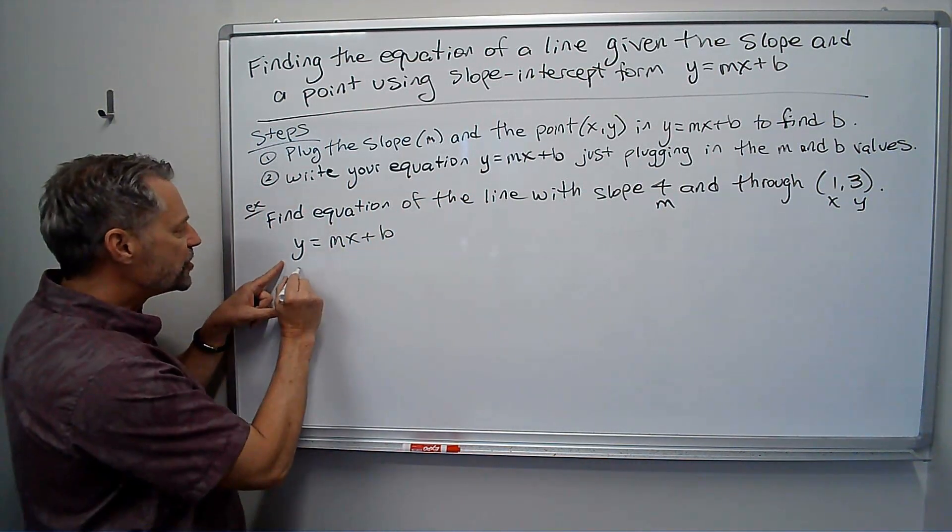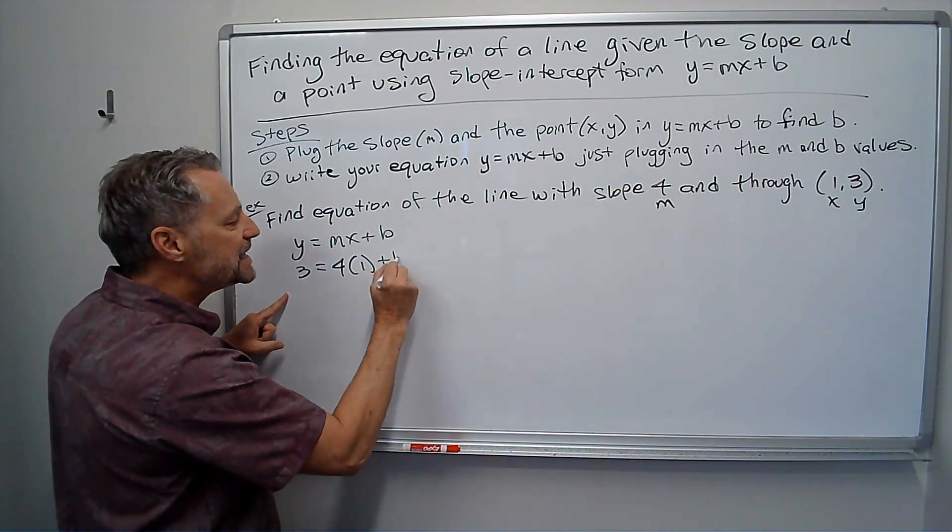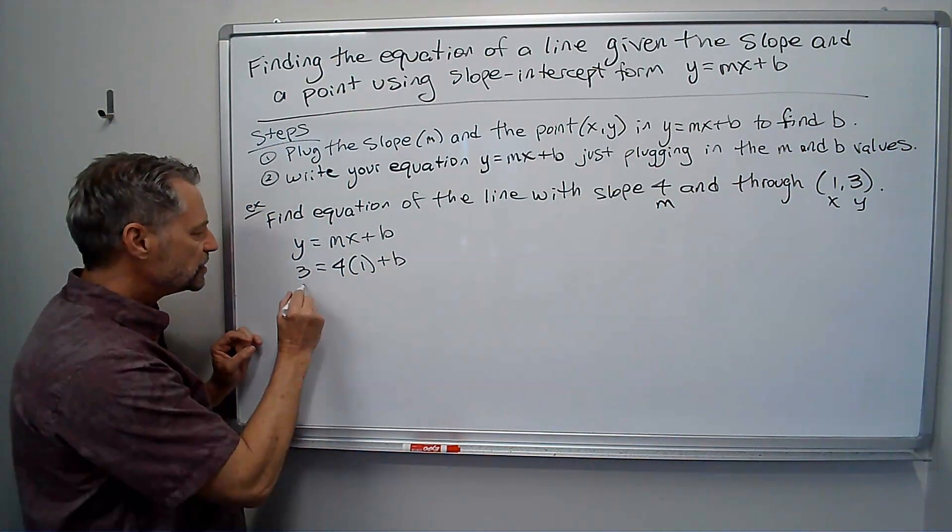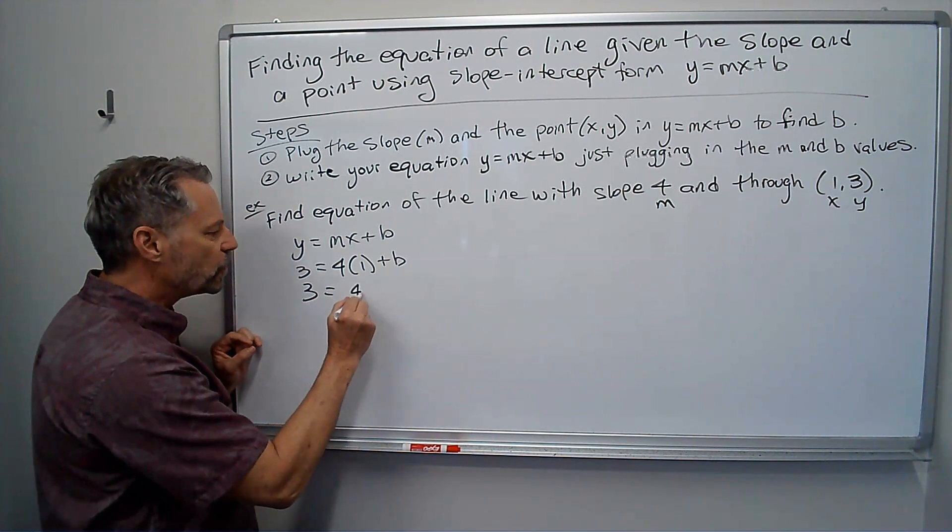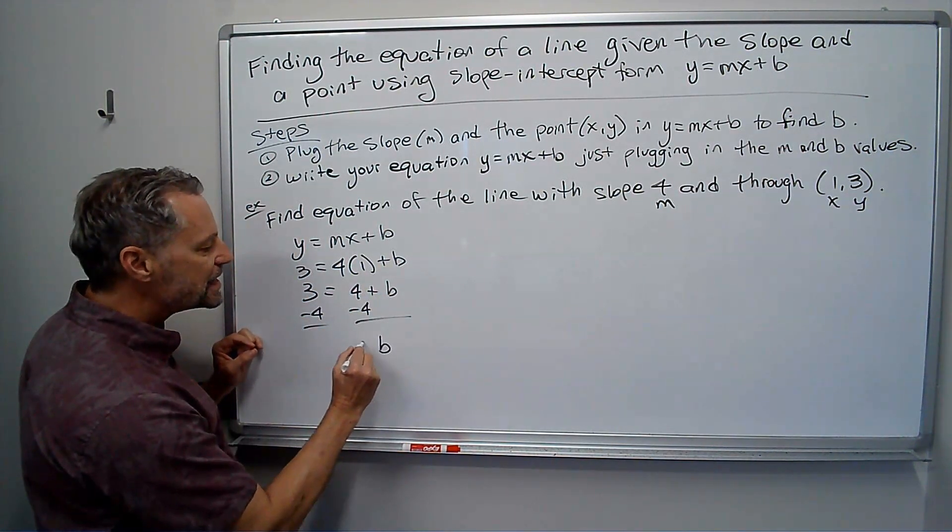Y was 3, m was 4, x was 1. I don't know b, but I can solve for it. So let's see, that equals 4 times 1 is just 4 plus b, subtract 4. I get b is negative 1.